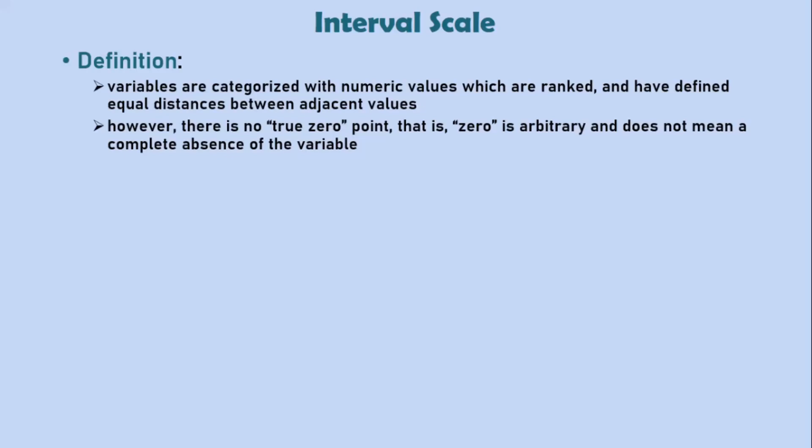Simply put, zero is part of the values in a variable on an interval scale. Therefore, interval scales can have negative numbers. However, because of this ability for an interval scale to dip below zero, you can only find differences or sum the values on an interval scale.